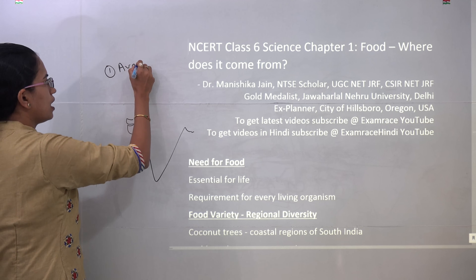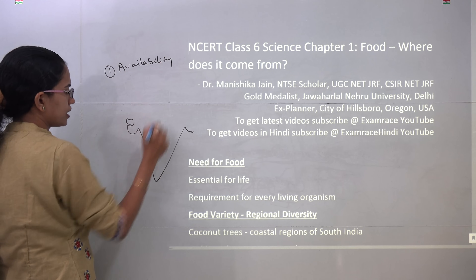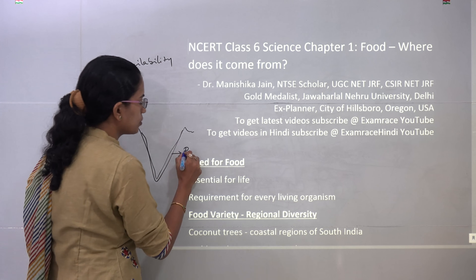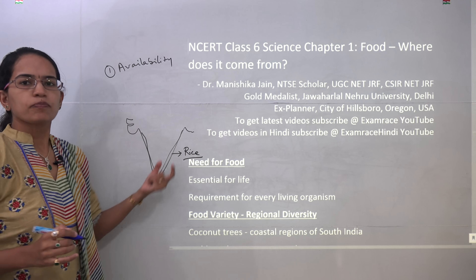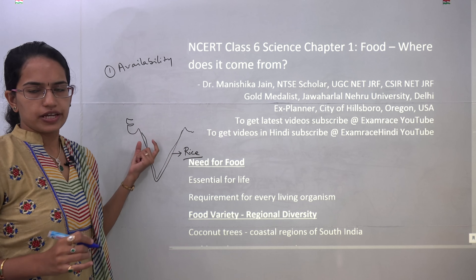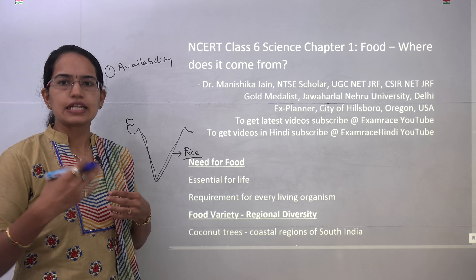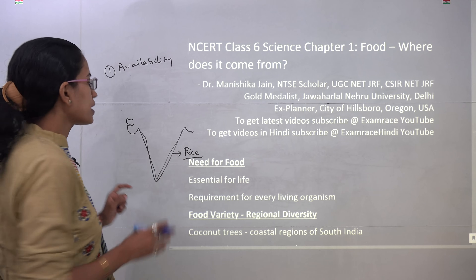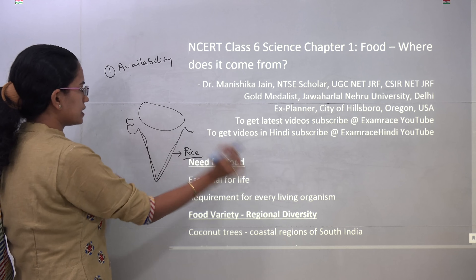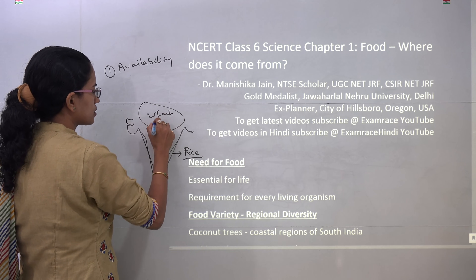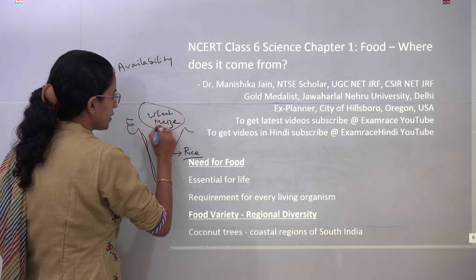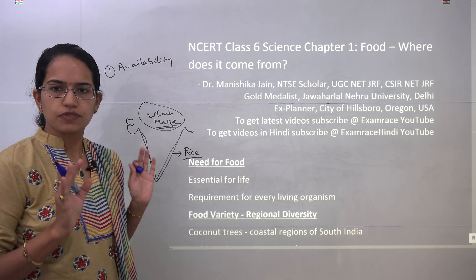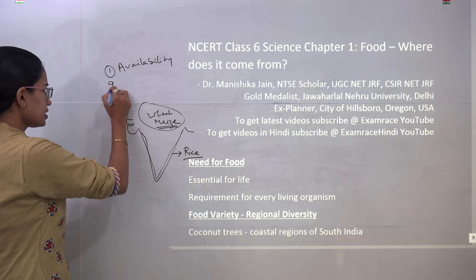The first element is availability. If I am living in a coastal area, the most abundant crop here would be rice. Therefore, rice would be easily available and any produce made out of rice, like idli or dosa, would be very easily found in the coastal areas of India. If I move to central India and the plains, you would have wheat and maize as the predominant crops, and roti or chapati would be the staple food found in these areas.